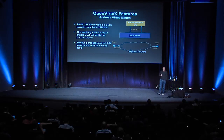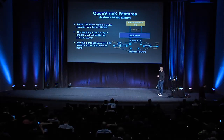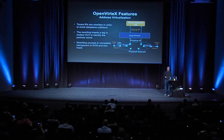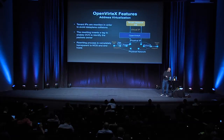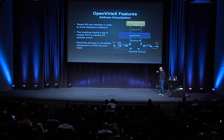Another key feature of OVX is address virtualization — OVX supports overlapping addressing schemes. It achieves this by exposing only a virtual topology to the tenant network operating system. When a VM starts talking, the first-hop switch inserts a tag in the packet header, thereby isolating the tenant's traffic and identifying which tenant is responsible for it. The cool thing is that nothing has to change: your network operating system is unmodified, and your VMs remain unmodified — they have no idea they're operating on a virtual network.